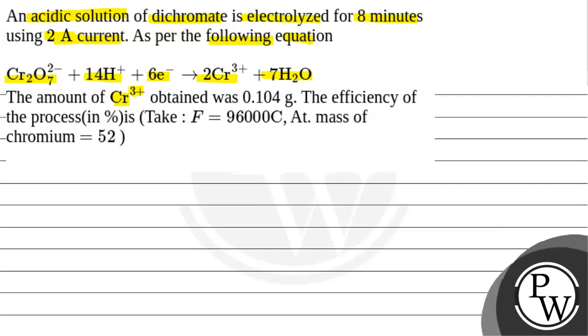The amount of Cr^3+ obtained was 0.104 grams. The efficiency of the process in percentage is what we need to find. We have given Faraday's constant as 96,000 coulombs, and the atomic mass of chromium is 52.